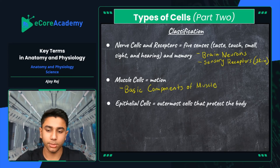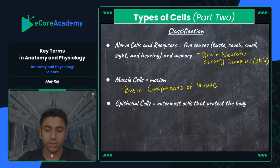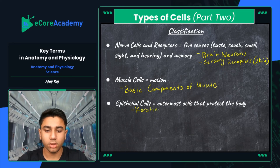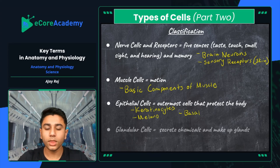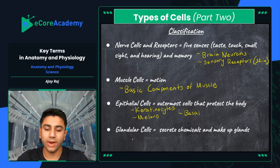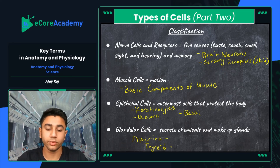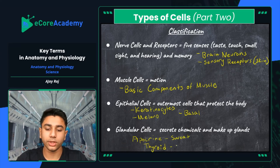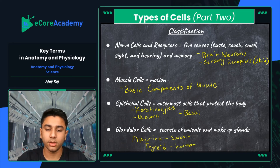Then we have epithelial cells, which are the outermost cells that protect the body — these are skin cells like keratinocytes, melanocytes, and basal cells. And of course you have glandular cells that secrete chemicals and make up glands, such as your apocrine glands, which help with sweat, and your thyroid, which controls certain bodily functions, helps produce thyroid hormone, and assists with metabolism.